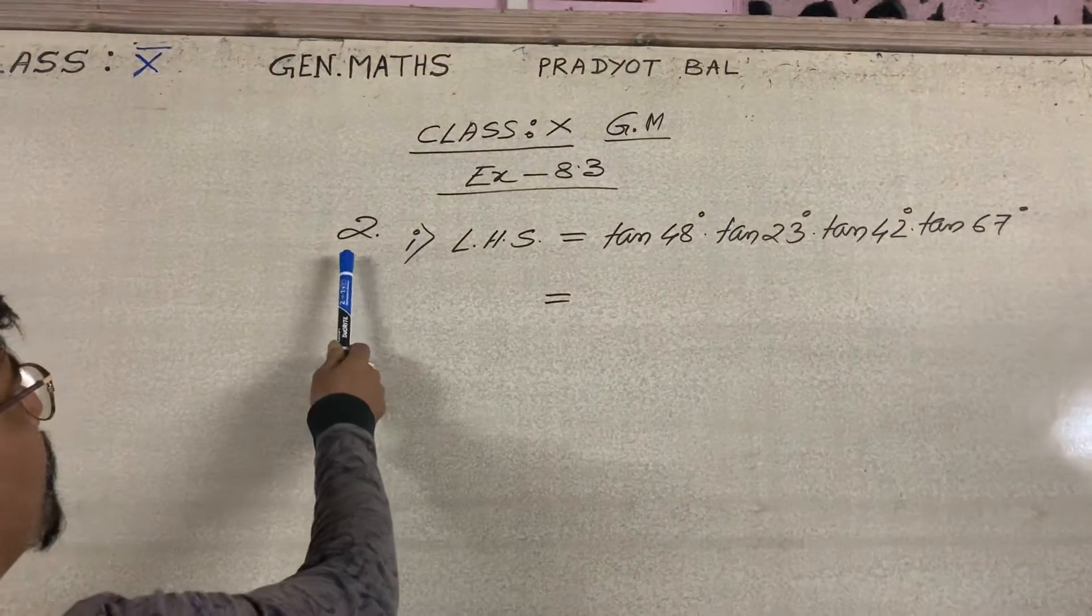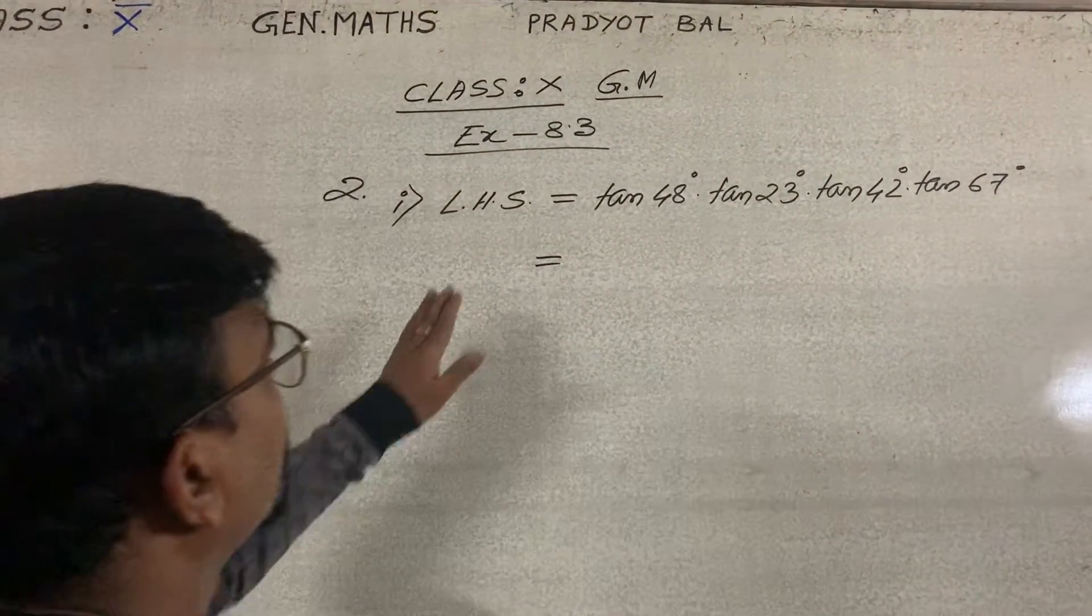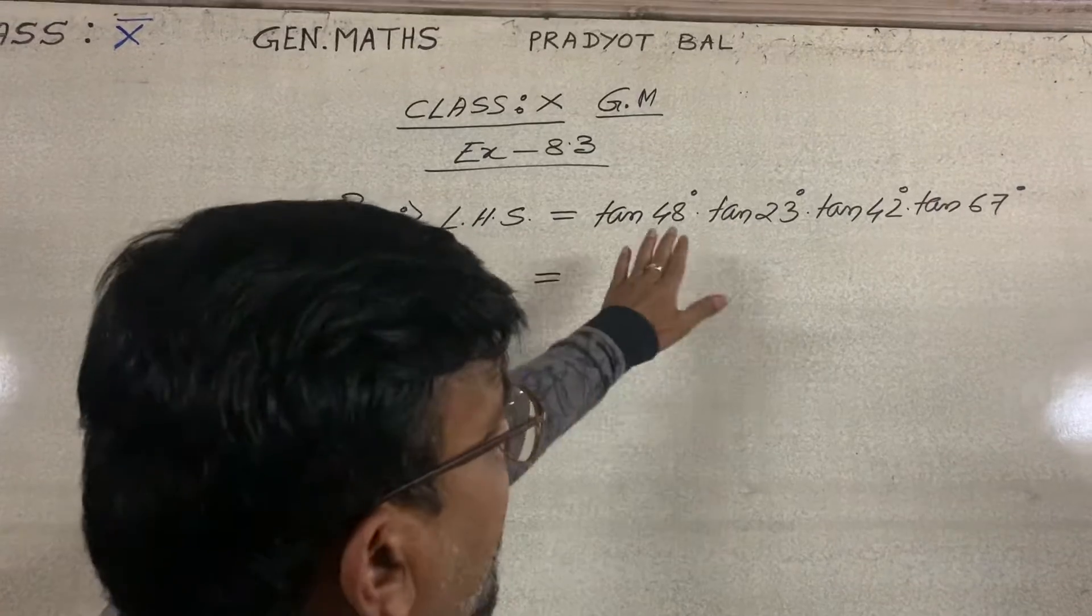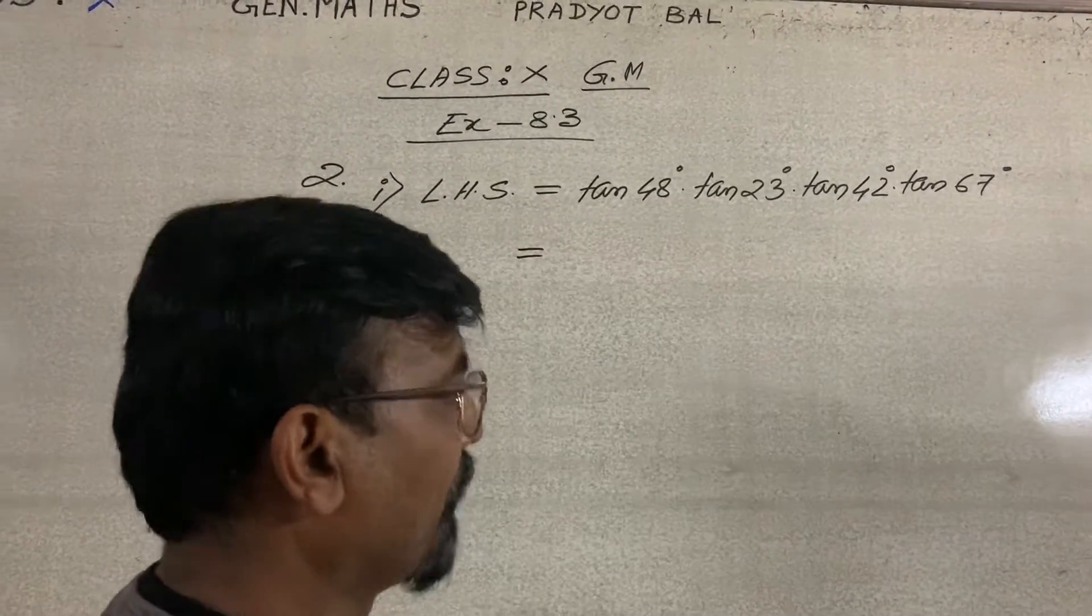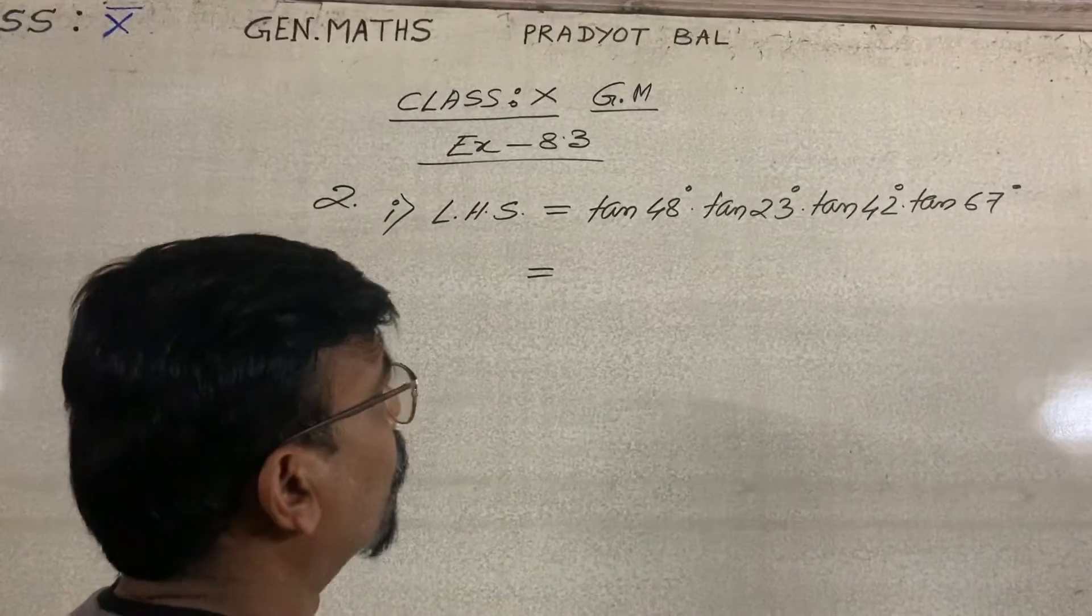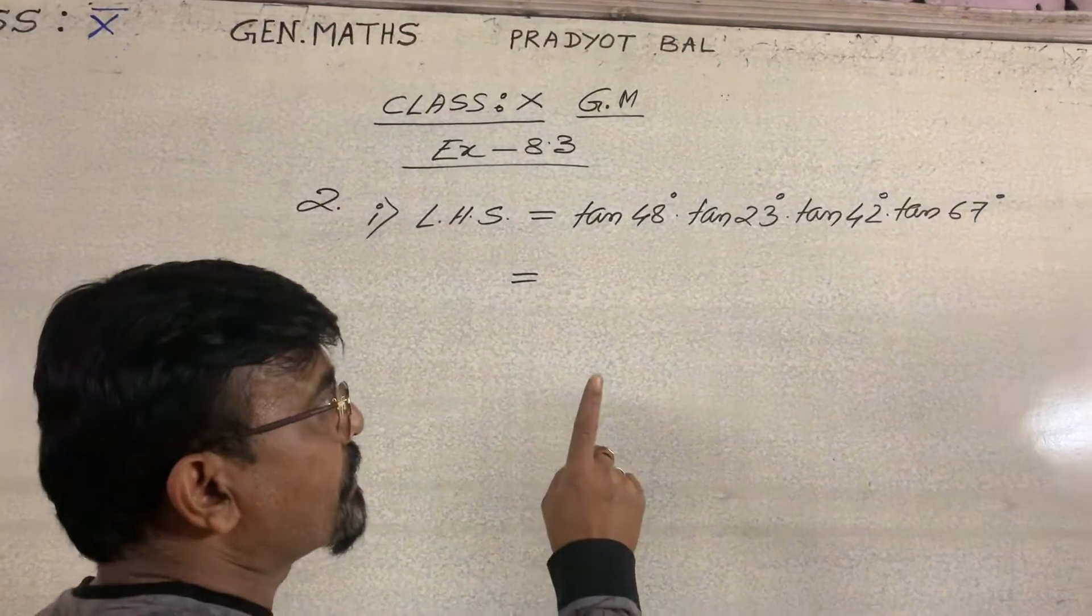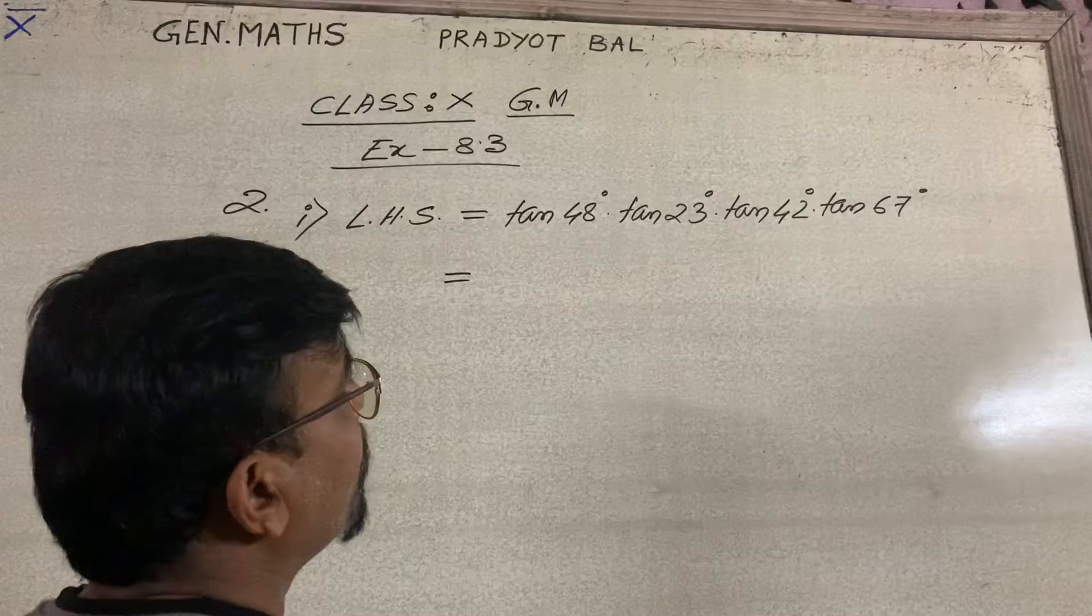Now, question number 21. I have written left hand side. We need to prove this left hand side is equal to 1. To prove it, you need to know the two angles must add up to 90 degree.